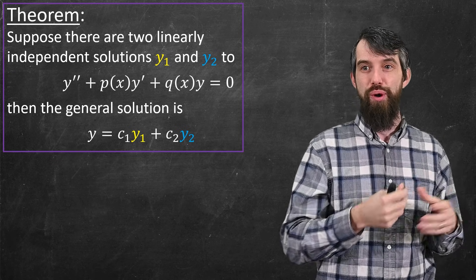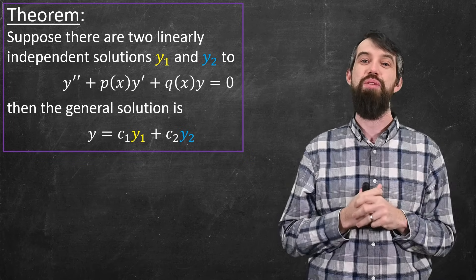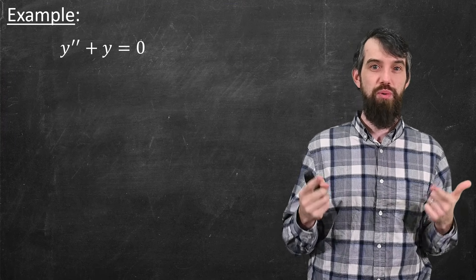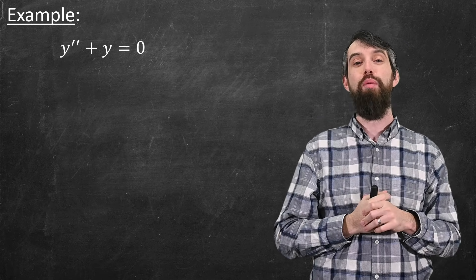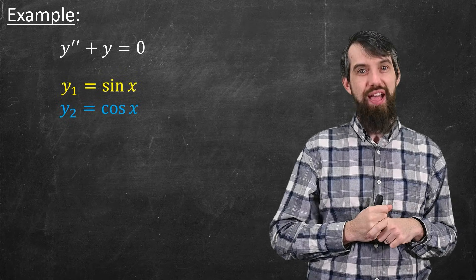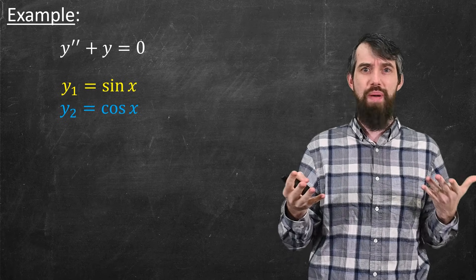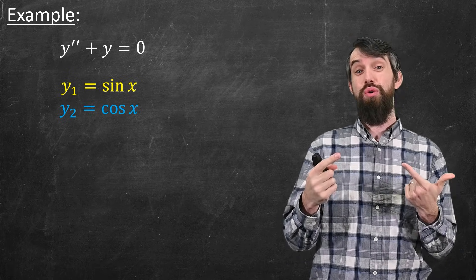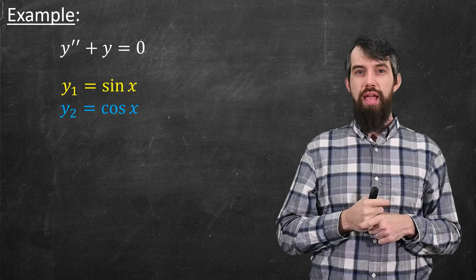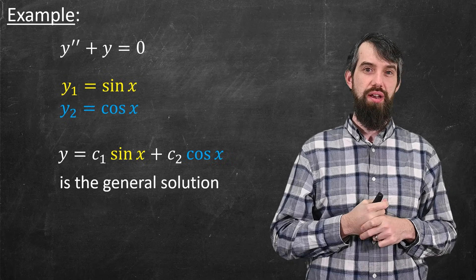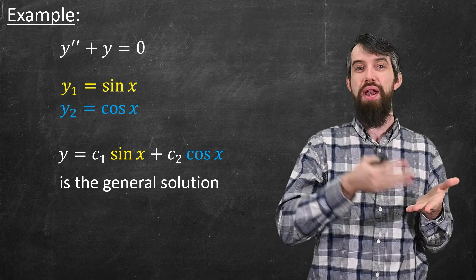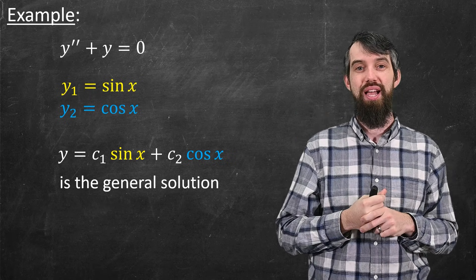This generalizes: for an nth-order equation with n linearly independent solutions, any solution is a linear combination of those n solutions. For example, consider y'' + y = 0. Two solutions are y1 = sin(x) and y2 = cos(x), which are linearly independent. You can verify: the second derivative of sin is -sin, and -sin + sin = 0; likewise for cosine. Since they're linearly independent, the general solution is c1·sin(x) + c2·cos(x). Given initial conditions, you can find c1 and c2, yielding the unique solution guaranteed by the existence and uniqueness theorem.